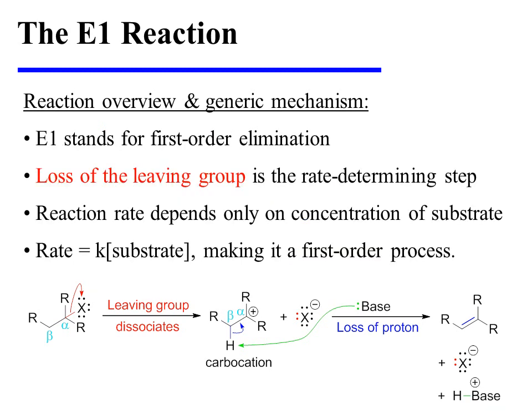E1 stands for first order elimination. The loss of the leaving group is the rate determining step, and in this step there is only one species that is mechanistically involved. Therefore, the reaction rate depends only on the concentration of that species, which is the substrate. This makes it a first order process.